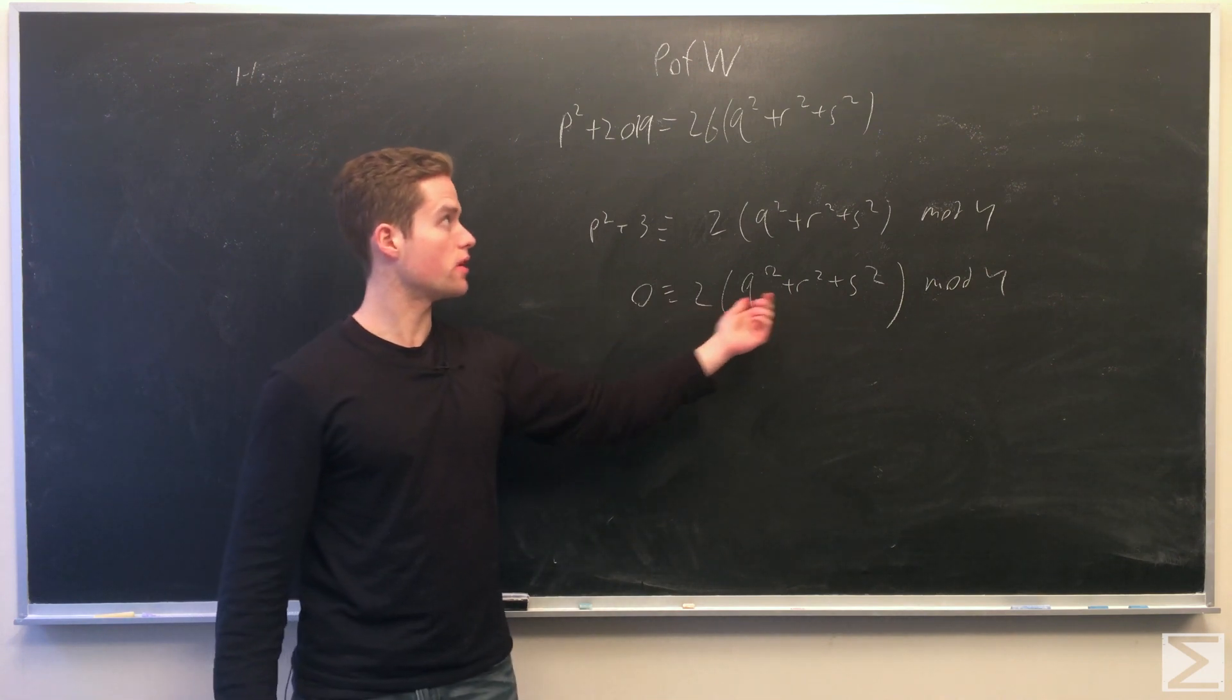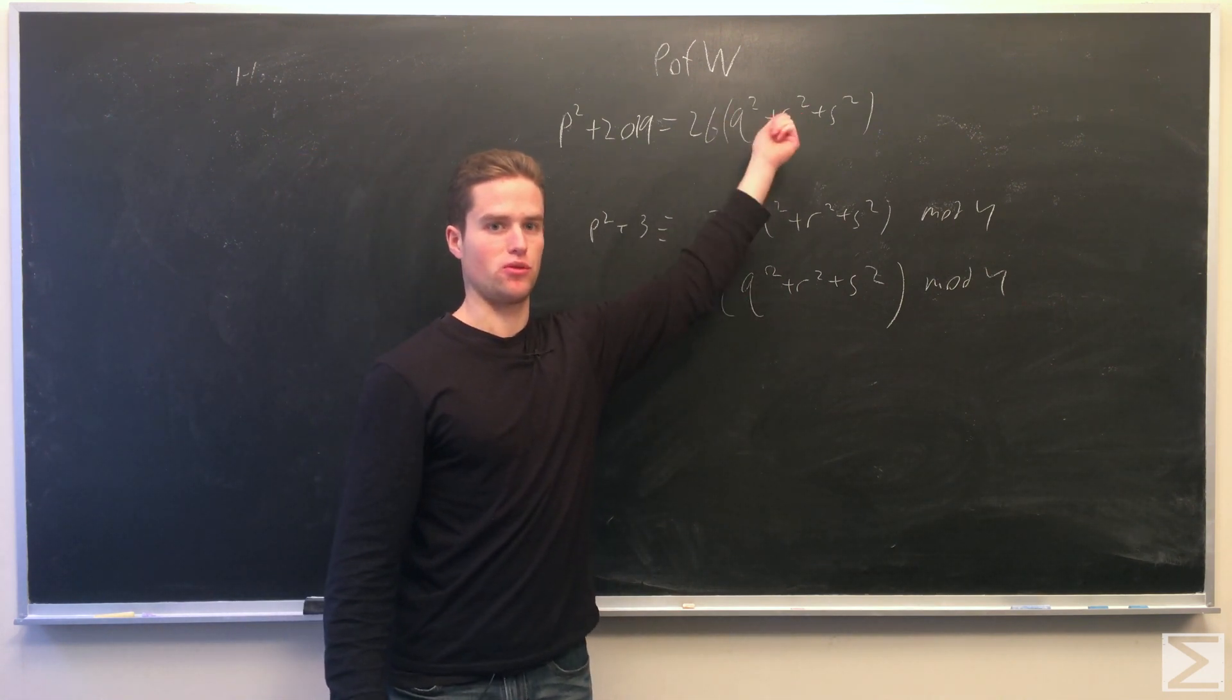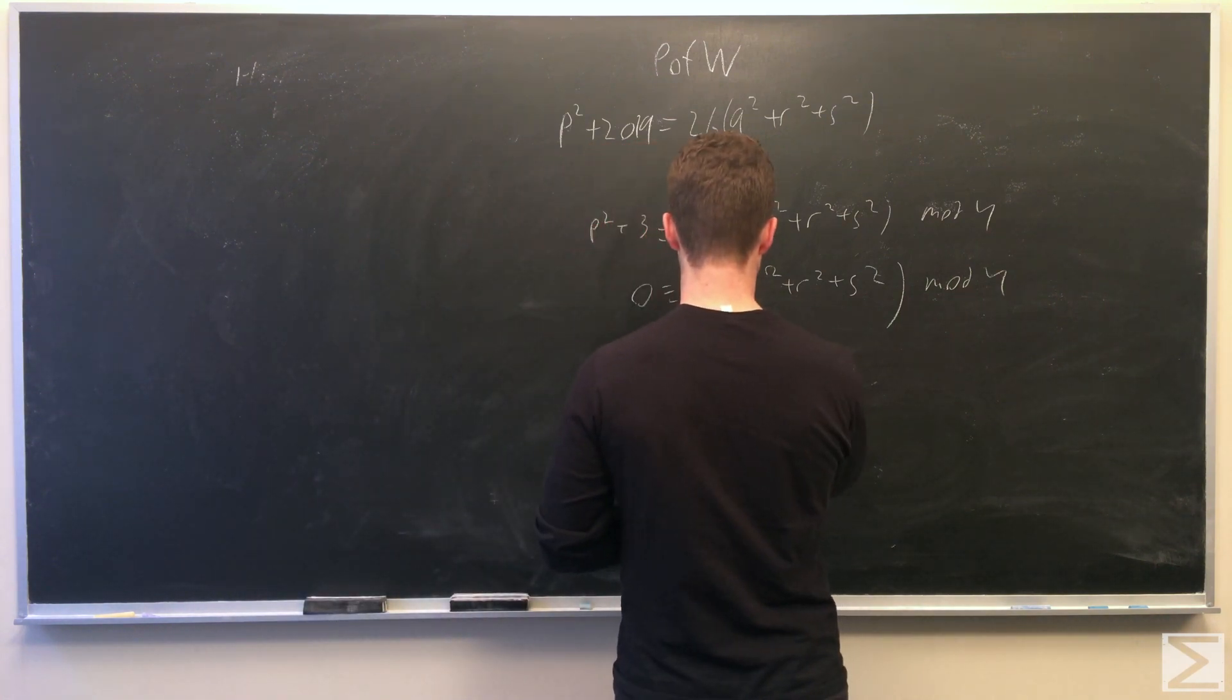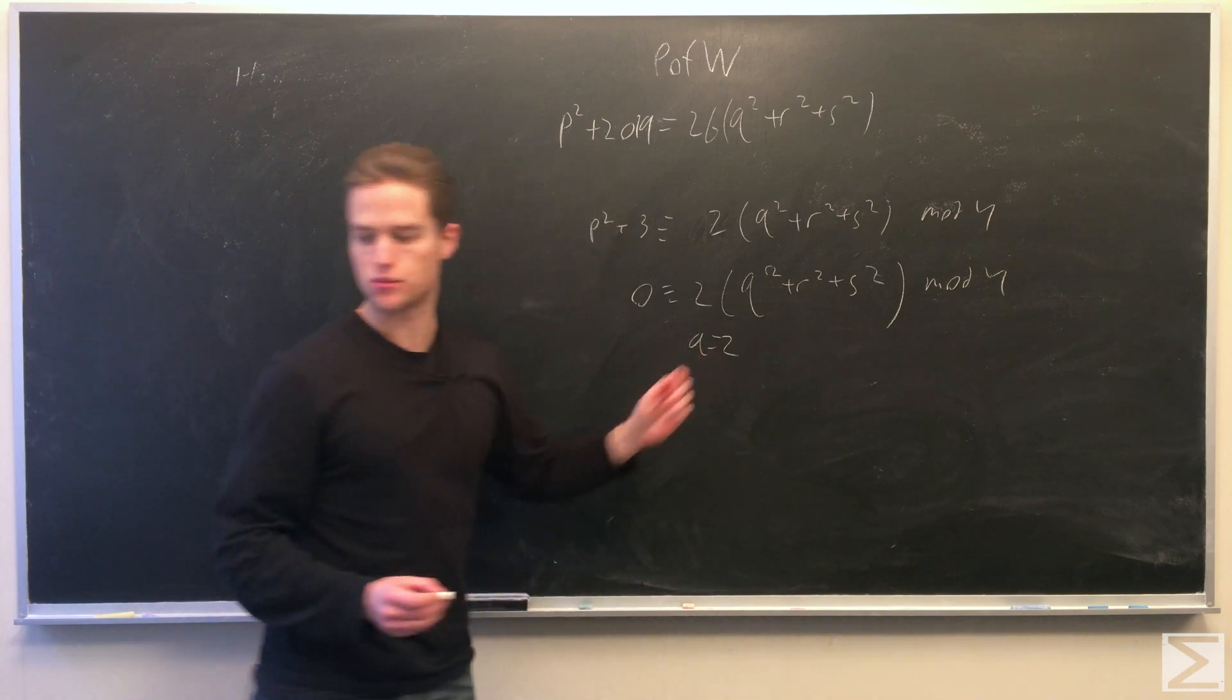We're just going to pick one. Note this equation is kind of symmetric here so we can always permute them. We're going to take q equals 2. So that's one integer.